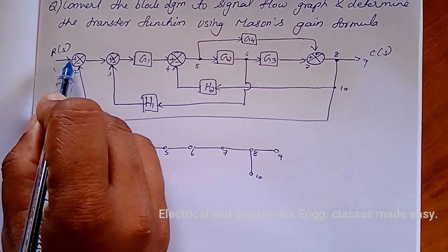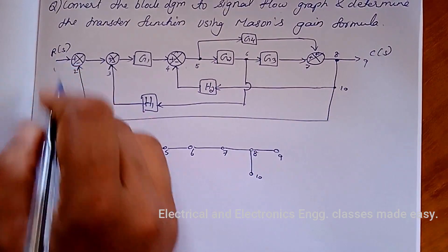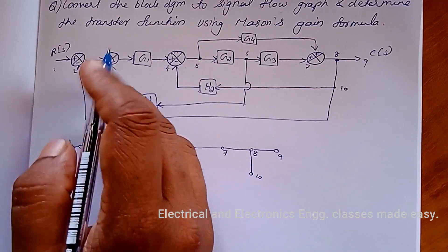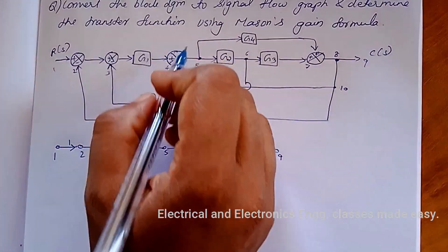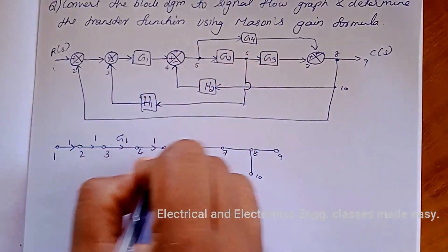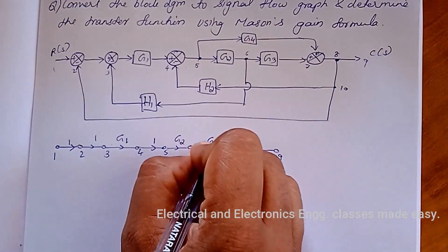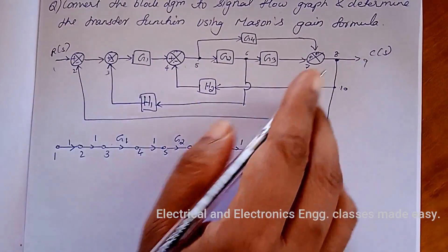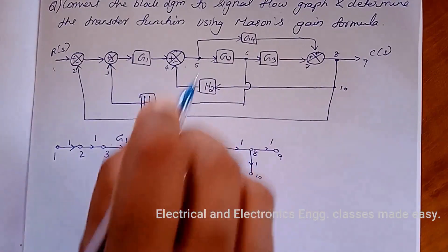Now we have to mark the gains. Between nodes 1 and 2 the gain is 1; mark the arrow. Between nodes 3 and 4 the gain is G1. Between 4 and 5 it is 1. Between 5 and 6 it is G2. Between 6 and 7 it is G3. Between 7 and 8 it is 1. Between 8 and 9 it is 1. Between 8 and 10 it is 1.